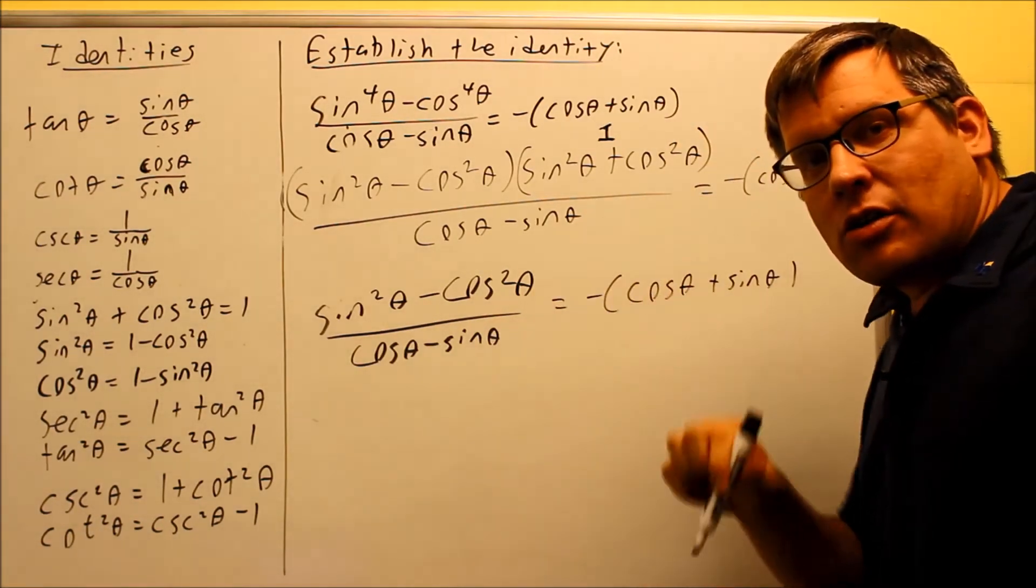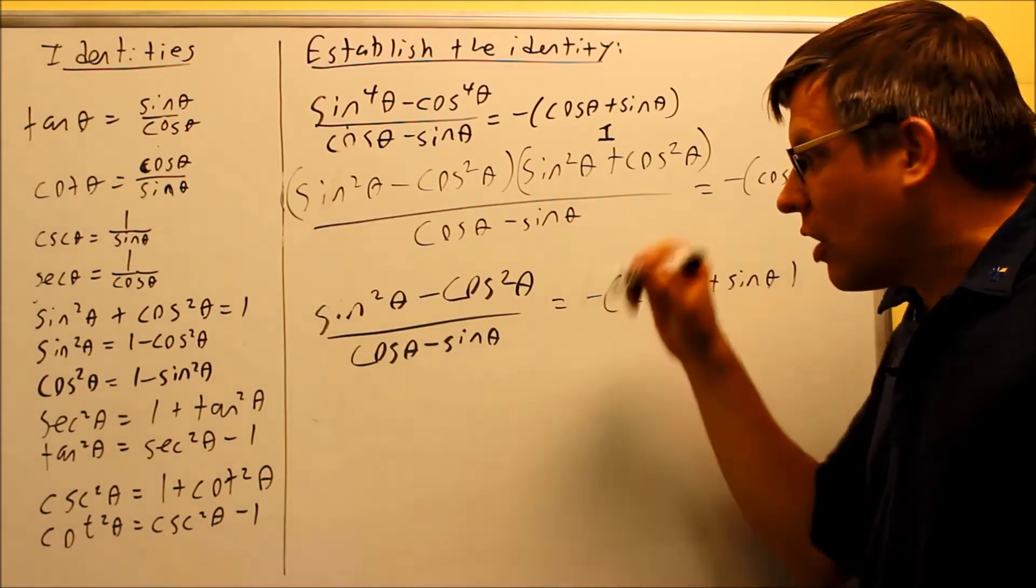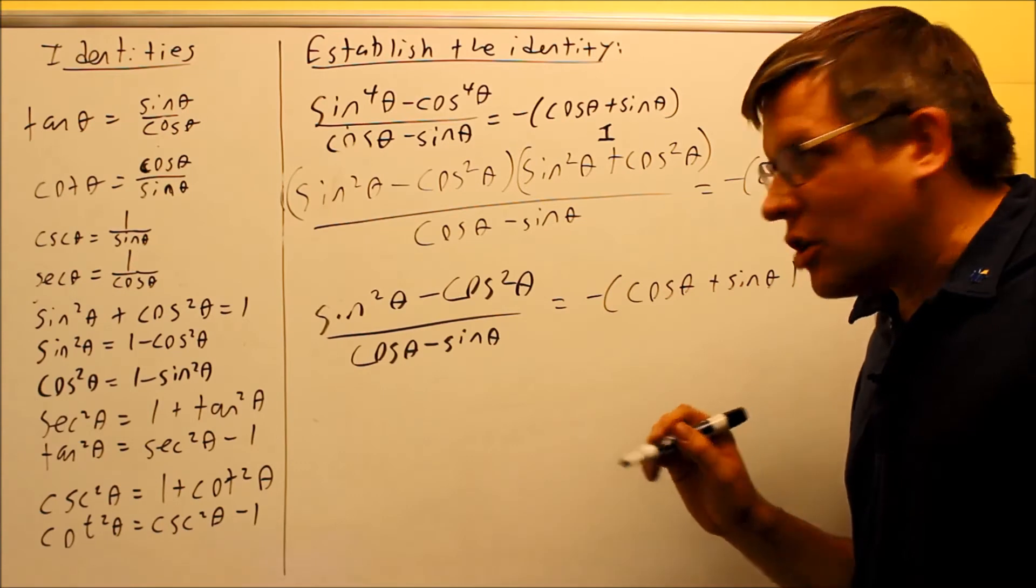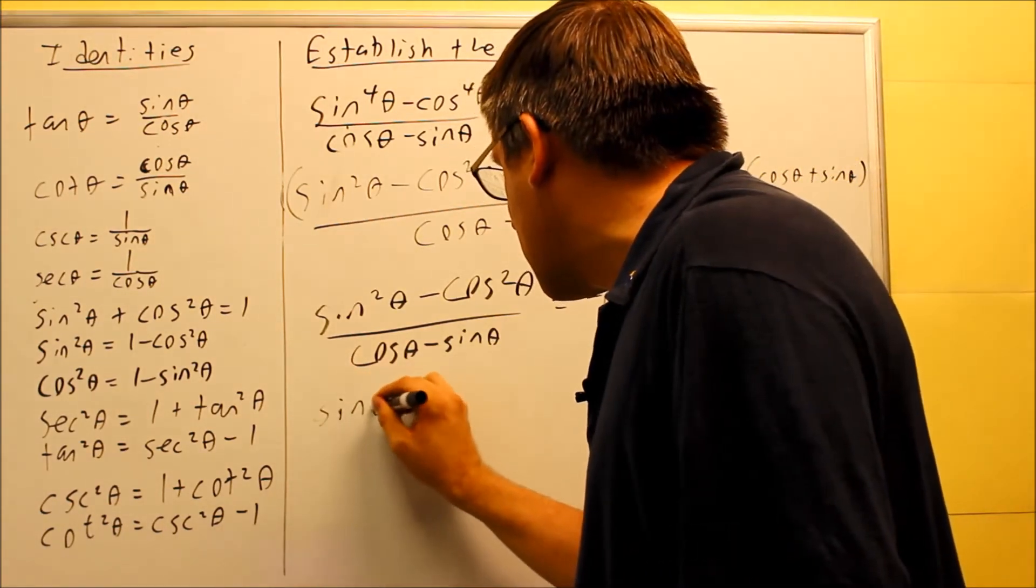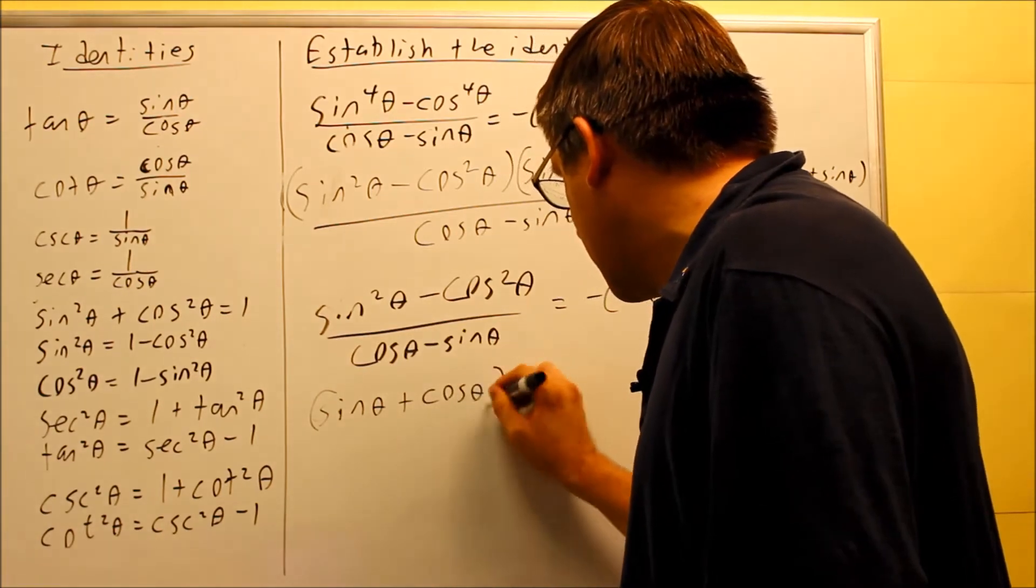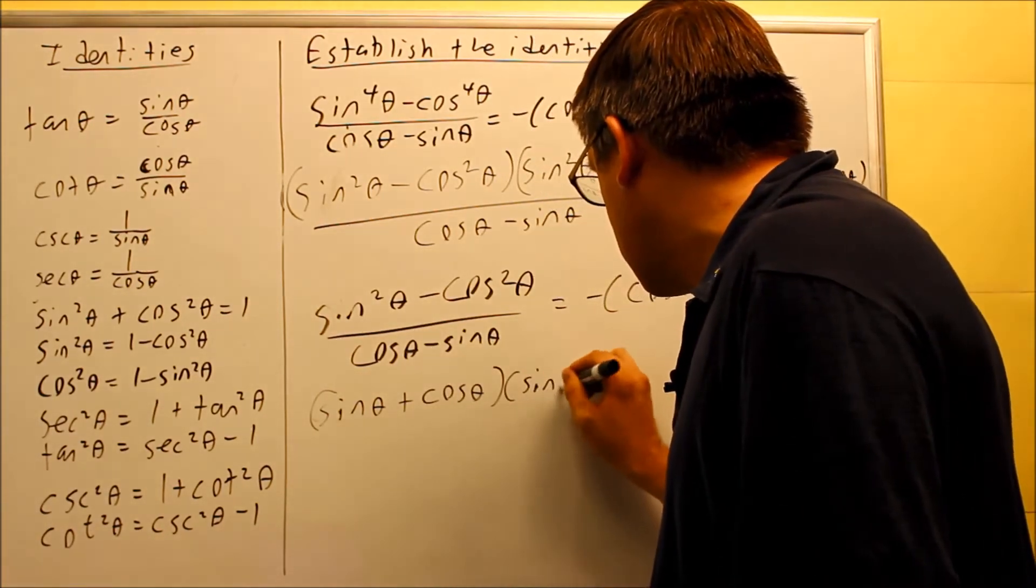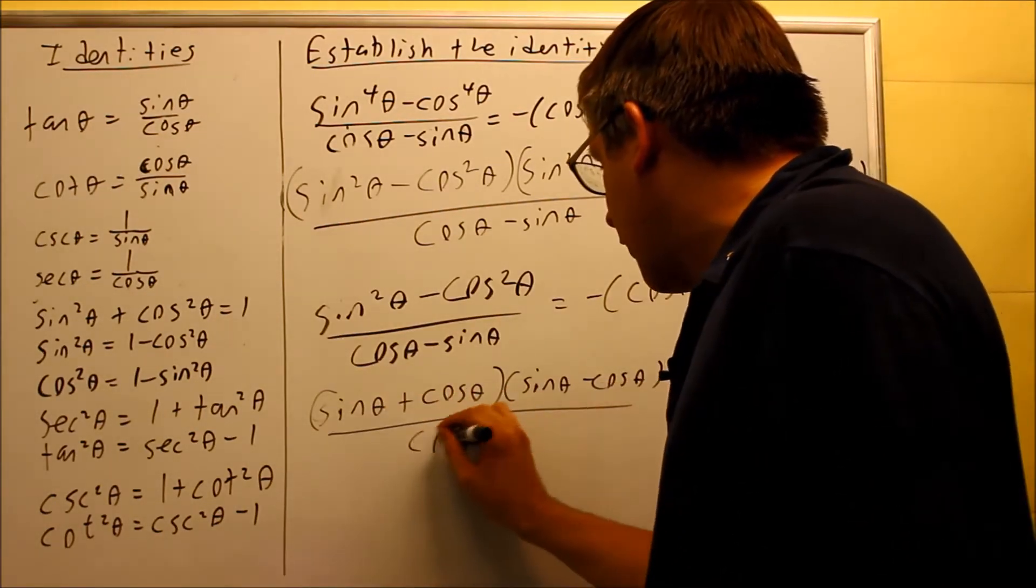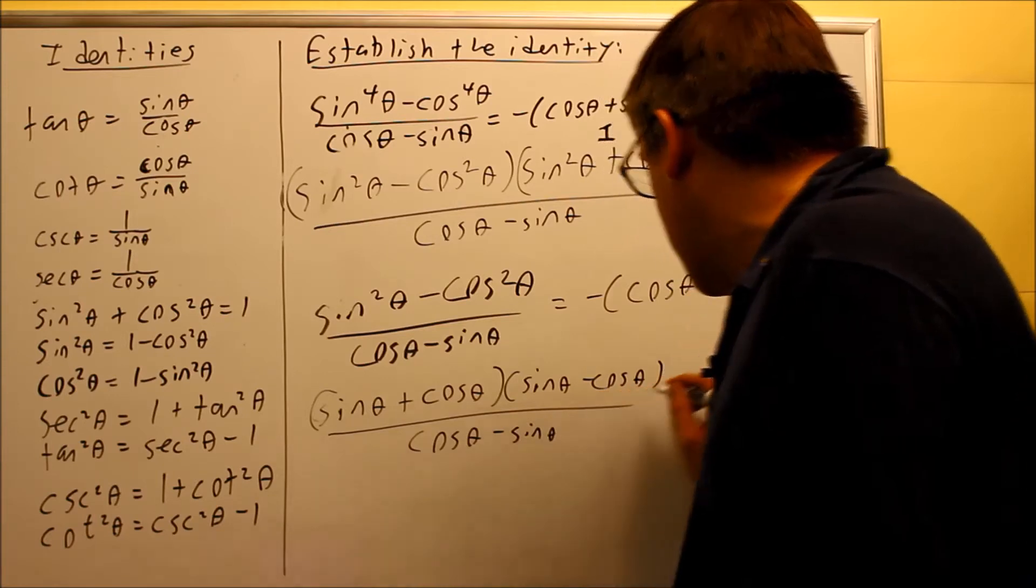I've taken care of that, and once I've applied the identity, you keep looking back at your techniques to see if you have another one you can apply. This is still something I can do a factoring step with. So I'm going to do difference of squares once again. So sine theta plus cosine theta, and then sine theta minus cosine theta.